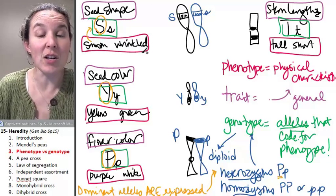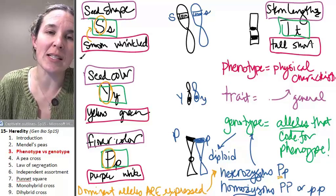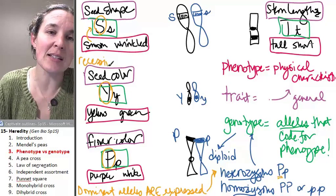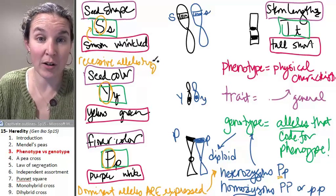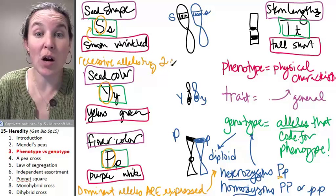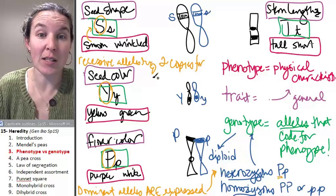So dominant alleles are expressed the way that the recessive allele works. Recessive alleles require two copies for expression.